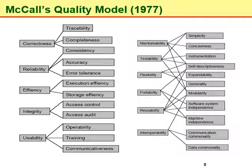McCall's model details the three types of quality characteristics in a hierarchy of factors, criteria, and metrics — into 11 factors, 23 different criteria, and some metrics. The 11 factors describe the external view of the software as viewed by the users. These factors, represented at the top of the hierarchy, are: correctness, reliability, efficiency, integrity, usability, maintainability, testability, flexibility, portability, reusability, and interoperability.